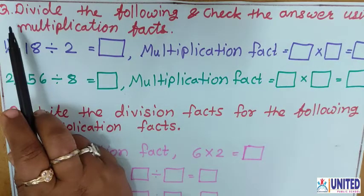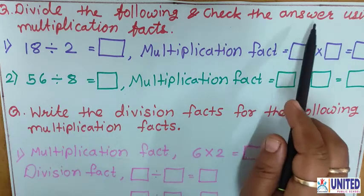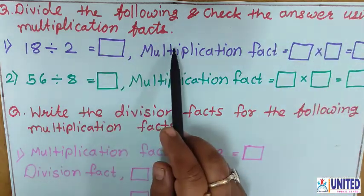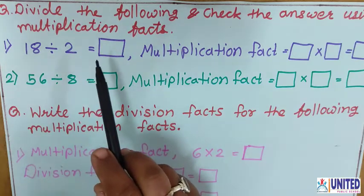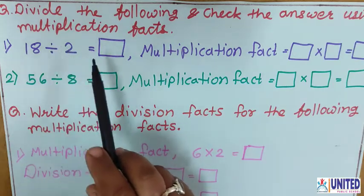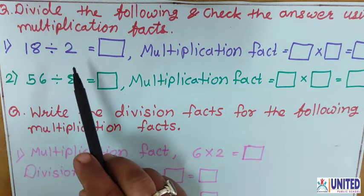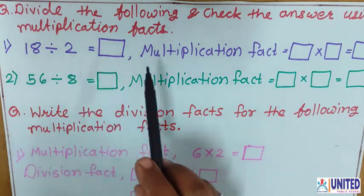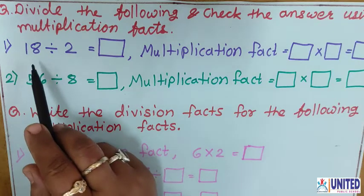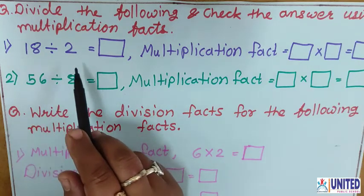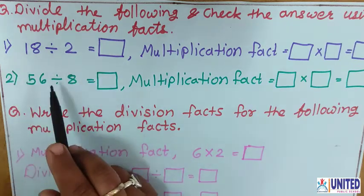Let us see the exercise related to division and multiplication. This shows the relation between division and multiplication. The question is: divide the following and check the answer using multiplication facts. You know that division and multiplication both are the opposite. So first, we solve the division and see how we can check it using multiplication. So, 18 divided by 2 — that means you have to speak out the 2 times table until 18 comes.